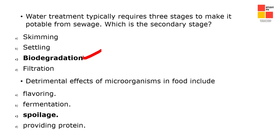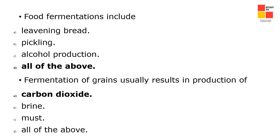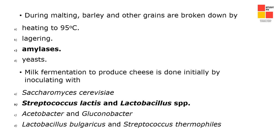Detrimental effects of microorganisms cause food spoilage. Fermentation includes leavening bread, pickling, and alcohol production — all of the above is the right answer. You should know pickling, alcohol fermentation, and leavening bread. The fermentation of grains usually results in the production of CO2.